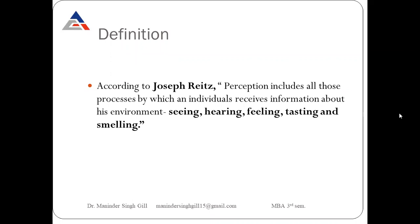As far as the definition of perception is concerned, according to Joseph, perception includes all those processes by which an individual receives information about his environment — seeing, hearing, feeling, tasting, and smelling. Perception means what we are receiving from our environment through our observation, hearing, feeling, and senses. Perception is directly related to human psychology.